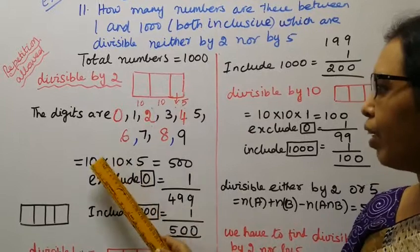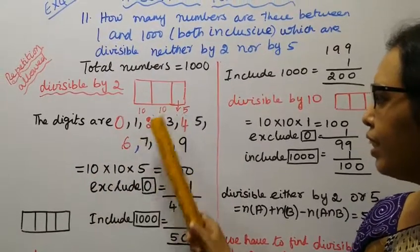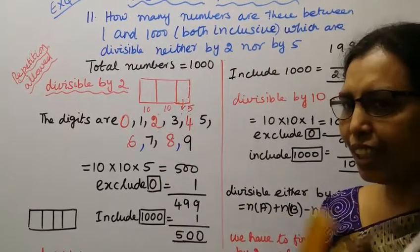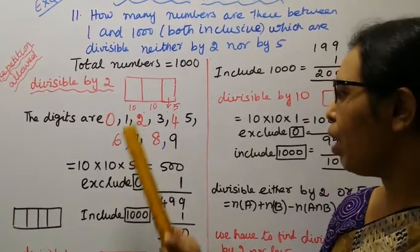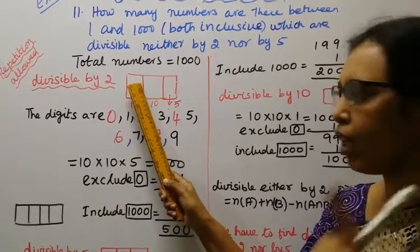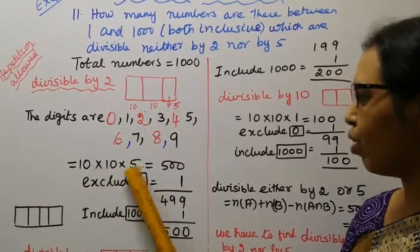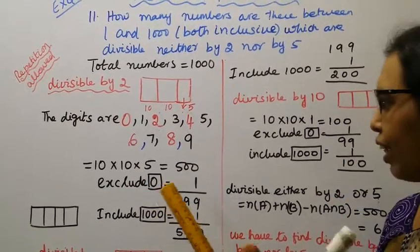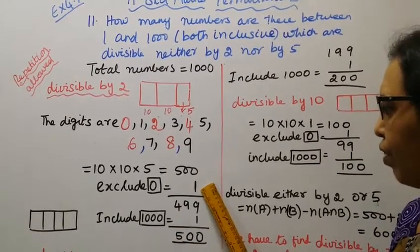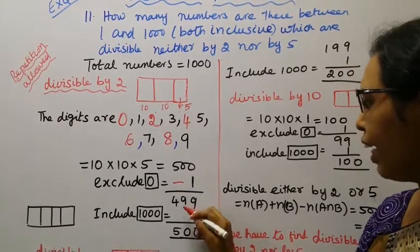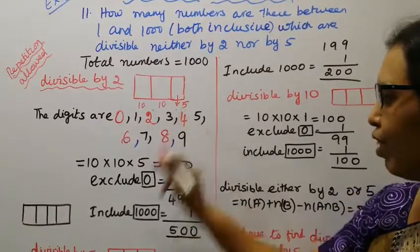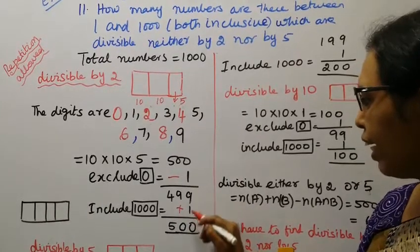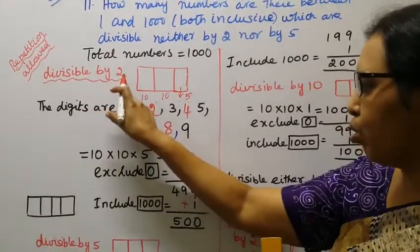The third place is 5 ways. 10 into 10 into 5, 500. On the first place, what is going to go? One. Zero is going to go. Exclude 0. 500 minus 1. 499 plus 1. Include 1000.